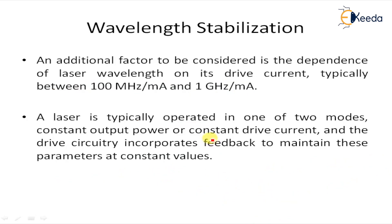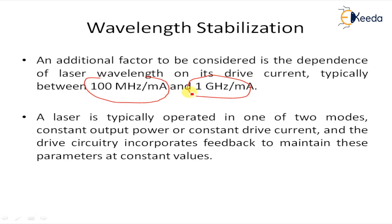An additional factor to consider is the dependence of the laser wavelength on its drive current, typically between 100 MHz per milliampere to 1 GHz per milliampere. A laser is typically operated in one of two modes: constant output power or constant drive current. The drive circuitry incorporates feedback to maintain this parameter at a constant value.